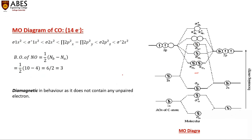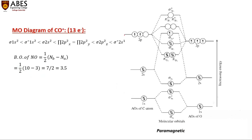CO⁺ contains 13 electrons. The filling is the same as CO, but the last electron is unpaired, so CO⁺ exists in a paramagnetic state. The bond order of CO⁺ = 3.5. Since bond order of CO⁺ > CO, CO⁺ is more stable, and the bond length of CO is greater than that of CO⁺.